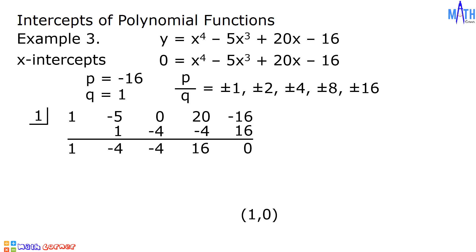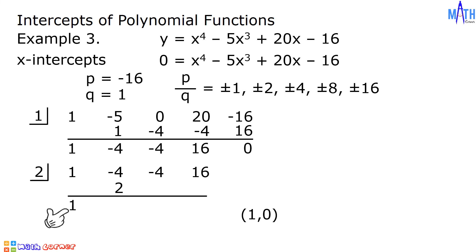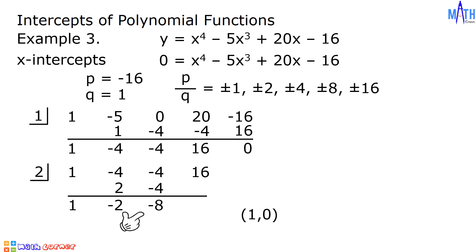Next, let us use the coefficients on the third row: 1, negative 4, negative 4, and 16. Let us try positive 2. Bring down 1. 2 times 1 equals 2. Negative 4 plus 2 equals negative 2. 2 times negative 2 equals negative 4. Negative 4 plus negative 4 equals negative 8. 2 times negative 8 equals negative 16. 16 plus negative 16 equals 0. Since the remainder is 0, it means that 2 is one of the roots. We have another x-intercept: 2, 0.